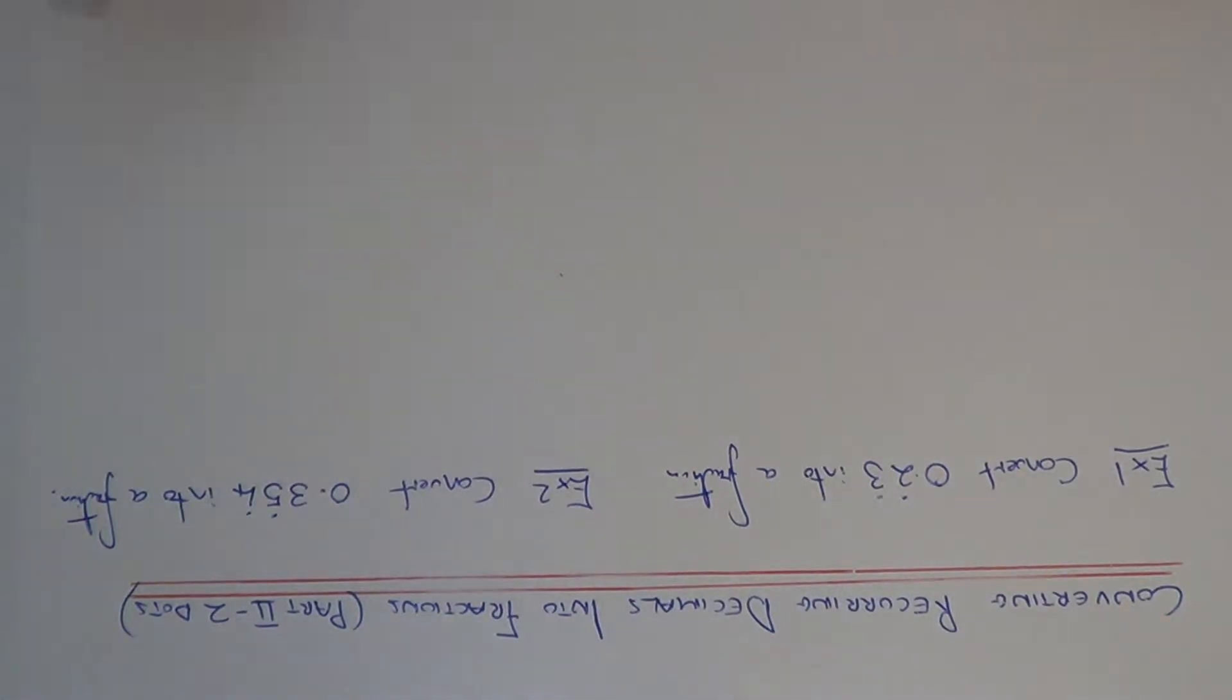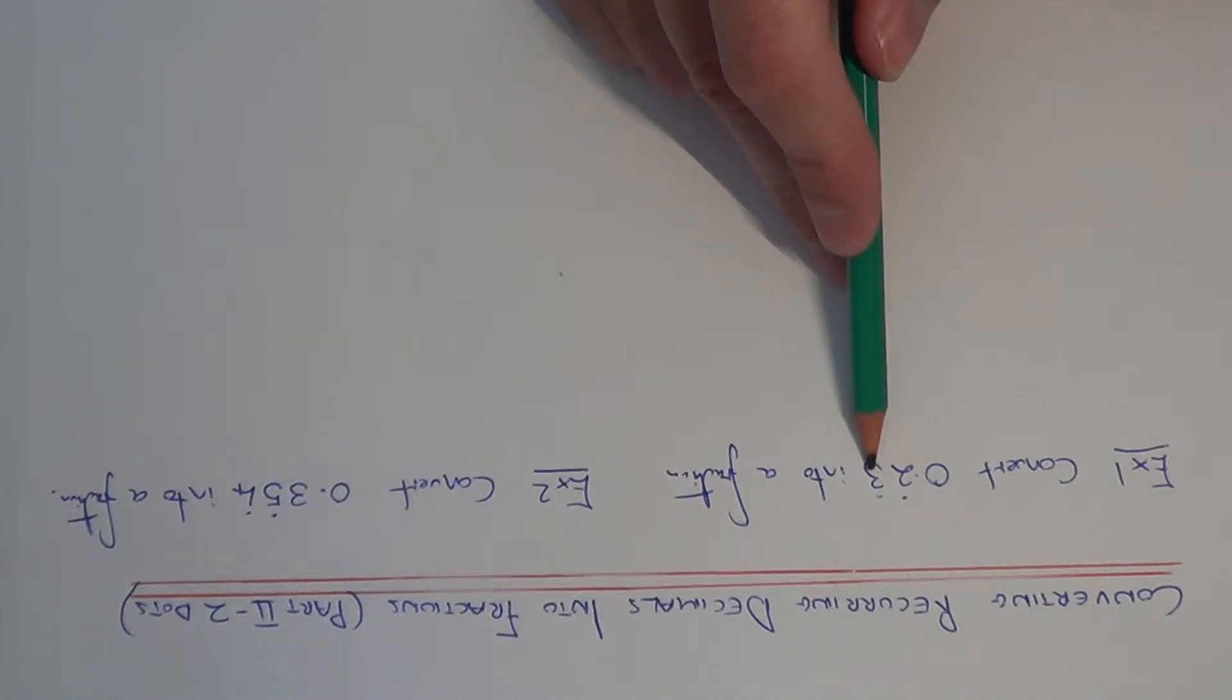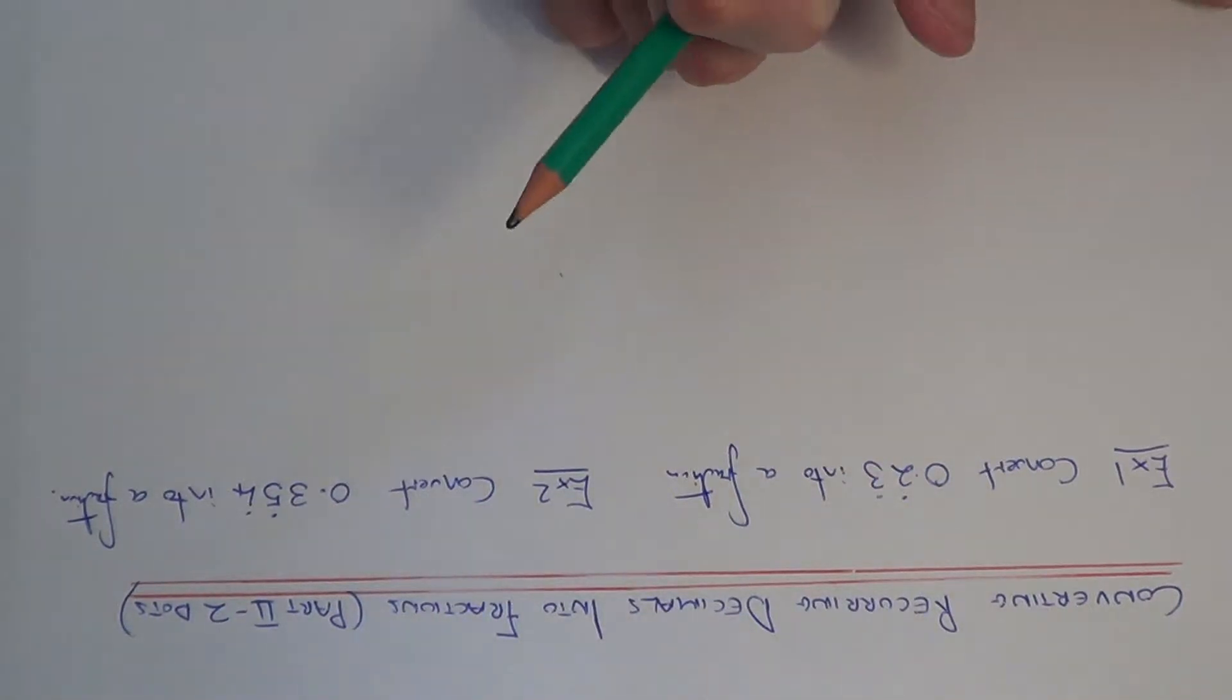These decimals here will have two dots above the numbers. So let's look at example 1, so we need to convert 0.23, there is a dot on the 2 and a dot on the 3, and we have to convert it into a fraction.